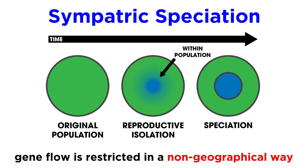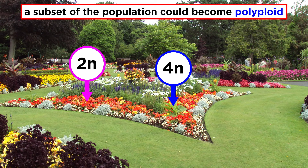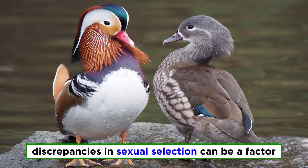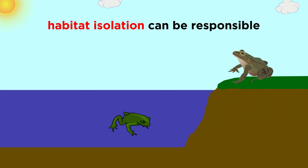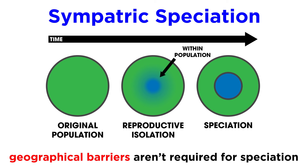With sympatric speciation, there is no geographical barrier, but rather gene flow is restricted in some other way, causing reproductive isolation. Perhaps a subset of the population develops polyploidy, and thus can only reproduce amongst one another. Discrepancies in sexual selection can be a factor. Habitat isolation can also be responsible. So although this is more rare, geographical barriers are not a prerequisite for speciation.